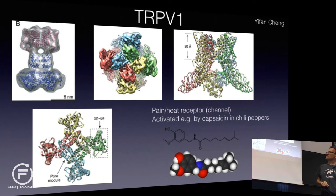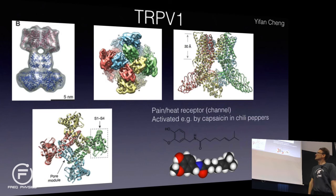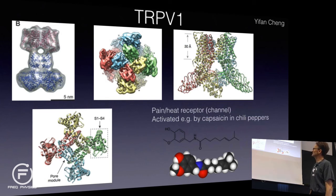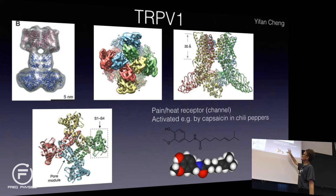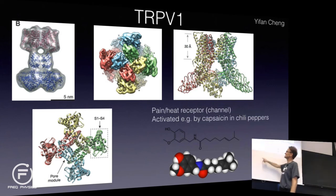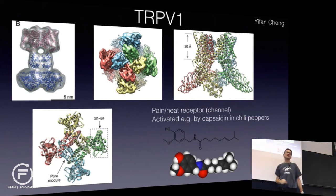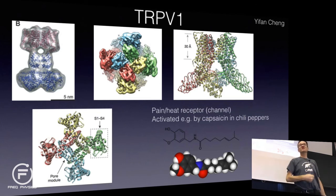We can find the binding sites, we can understand what these molecules do. In particular, these molecules are actually pain and heat receptors. If you're eating chili peppers, the molecule capsaicin binds to these channels and causes the channel to open — and that is how you sense pain or heat.